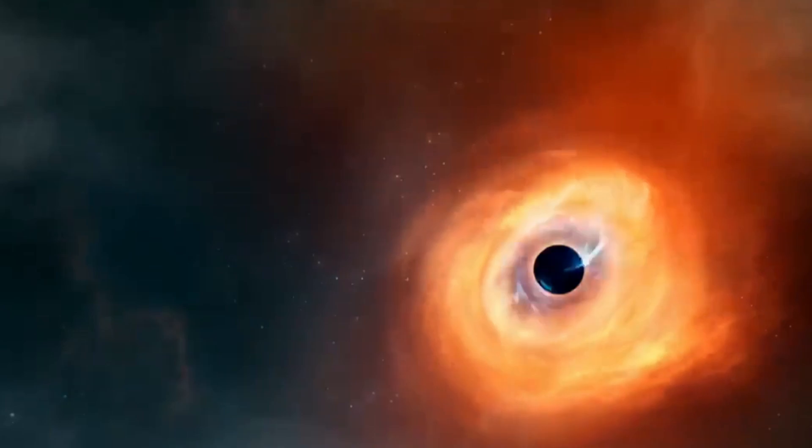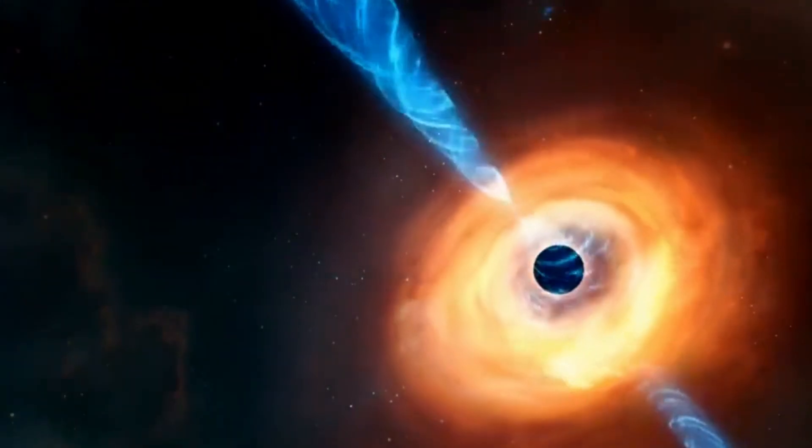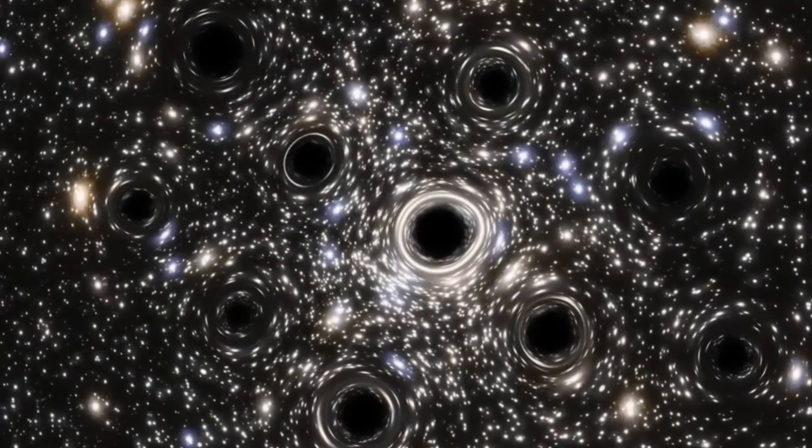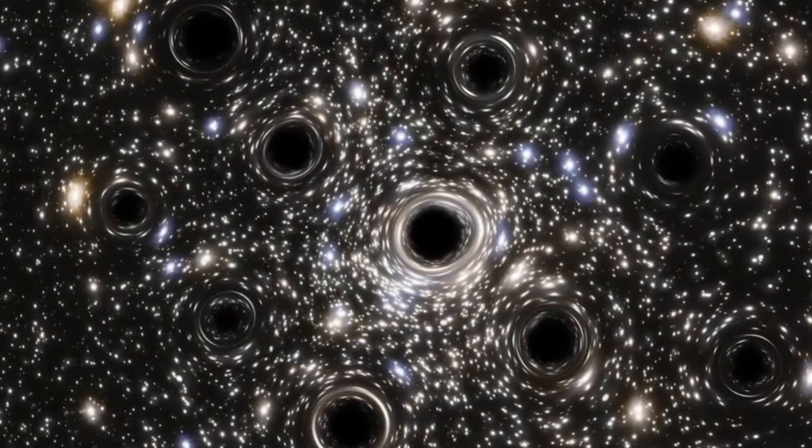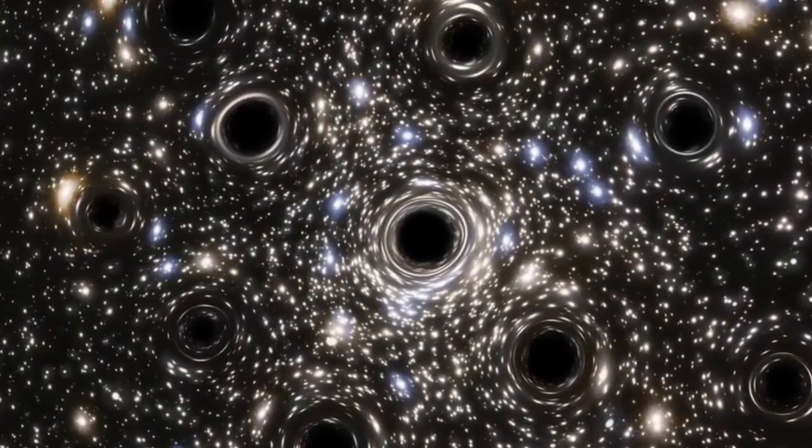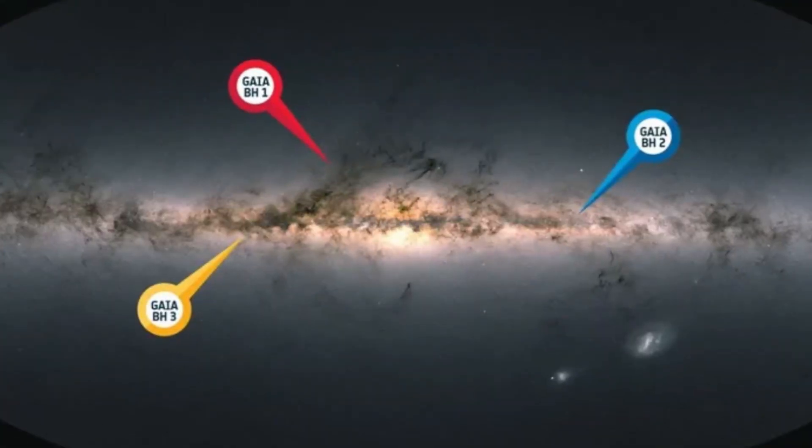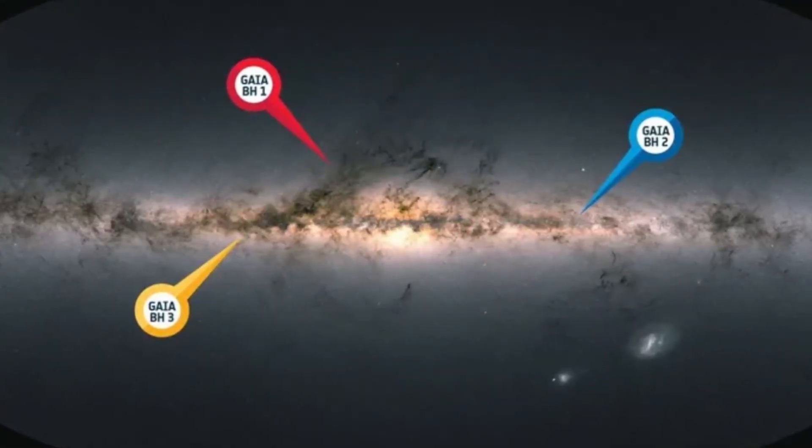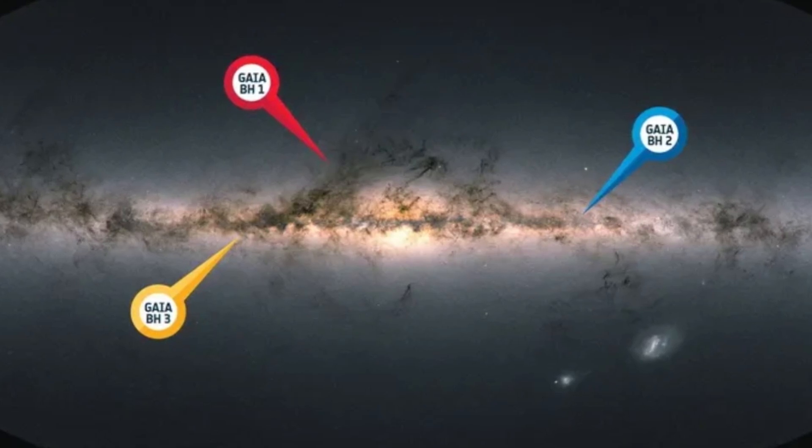Gaia BH3 is the first black hole that scientists have accurately measured the mass of. The upcoming data released from Gaia is expected to include many more black holes, offering a deeper insight into how dormant stellar black holes come to be. The discoveries of this mission are extending way beyond its initial goal of mapping billions of stars throughout the Milky Way.